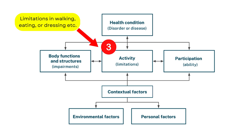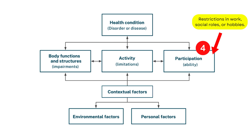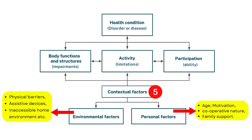Third is activity limitations — assess all limitations of the patient in daily life, such as independent eating, dressing, walking, etc., and note all activities in this category. Fourth is patient participation: restrictions in work, social roles, or hobbies are all listed under this category.